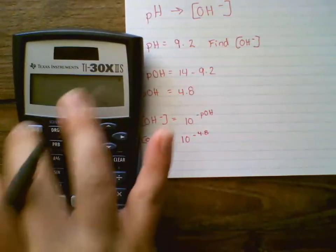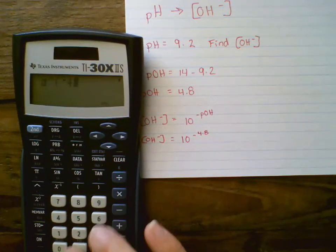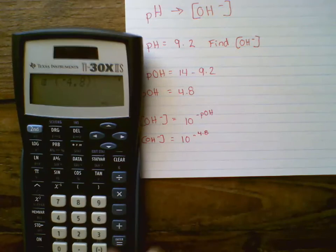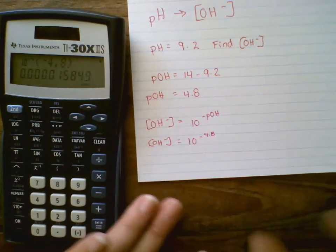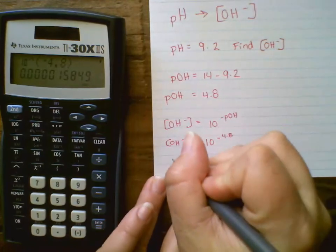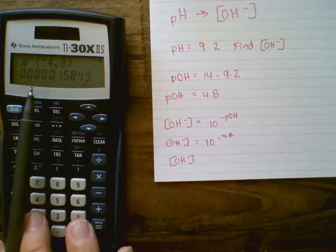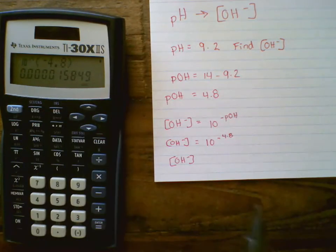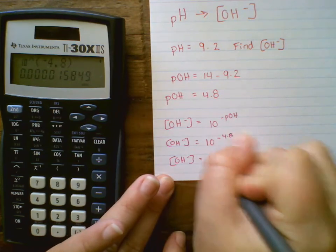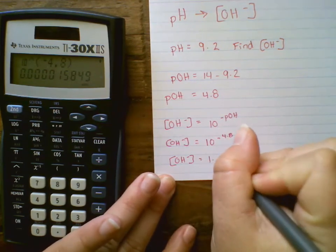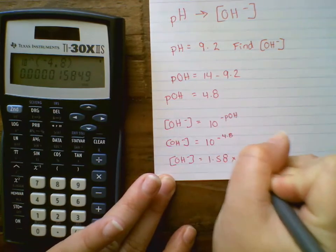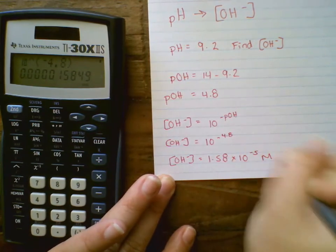So 10 to the x, negative 4.8. So I'm going to get an OH minus concentration, which is 0.0000158. I'm going to put that in scientific notation so it's a little bit easier for me to understand. So I'm going to move the decimal place over five spots. So I'm going to get 1.58 times 10 to the negative 5th as my molarity.